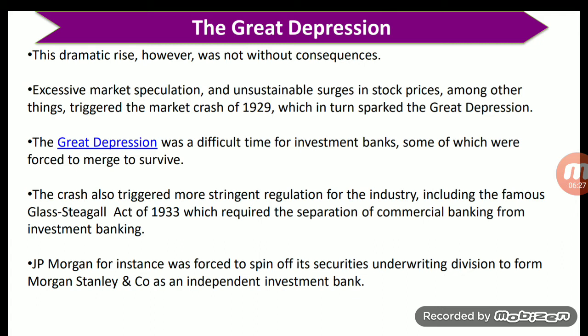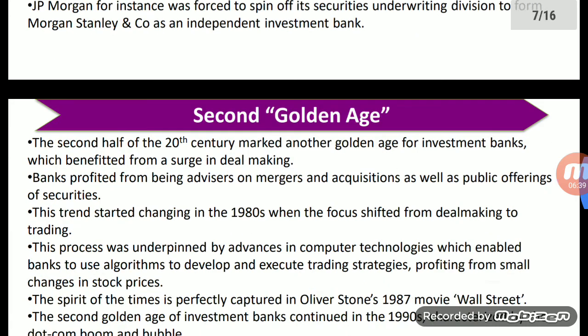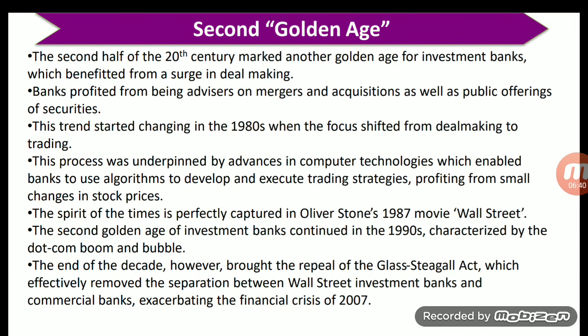JP Morgan, for example, was forced to spin off its securities underwriting division to form Morgan Stanley and Company as an independent investment bank. The second half of the 20th century marked another golden age for investment banks, which benefited from a surge in deal-making.